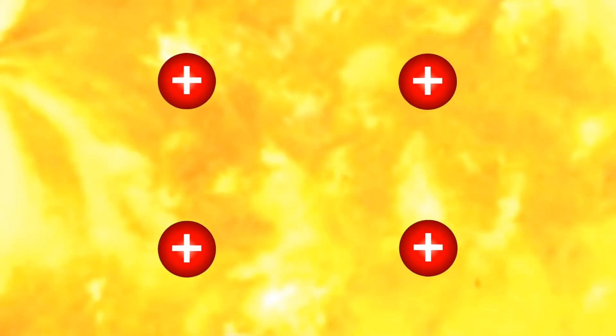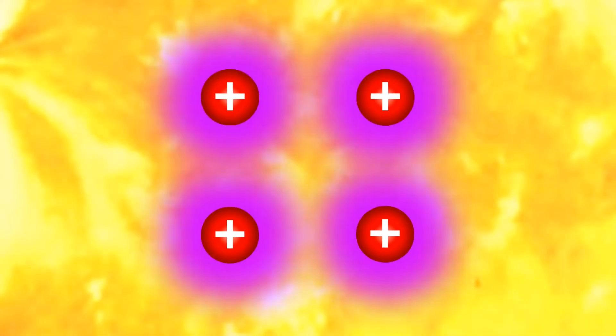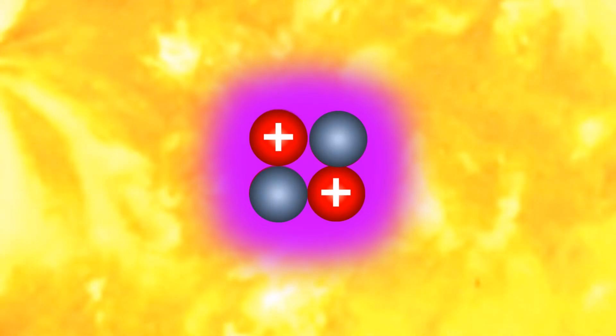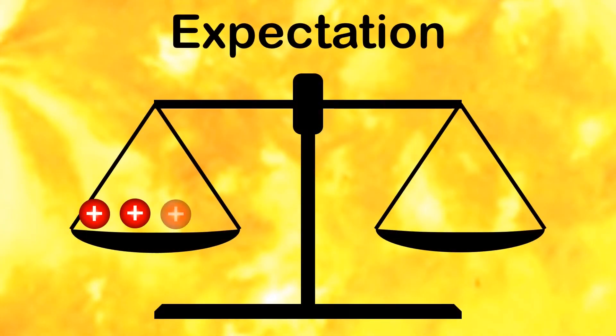But how does this relate to fusion in stars? Well, as already mentioned, four hydrogen nuclei fuse into a single helium nucleus. Now logically, you'd expect the mass of four individual hydrogen nuclei to be exactly the same as a helium nucleus.